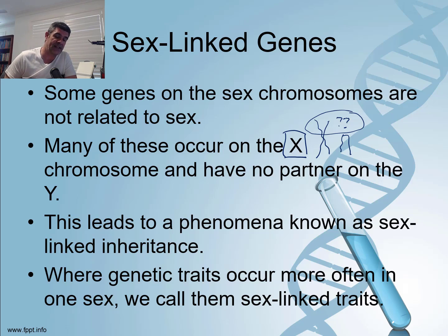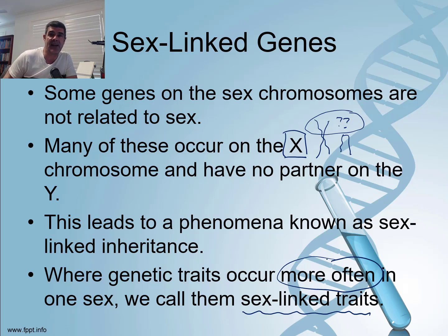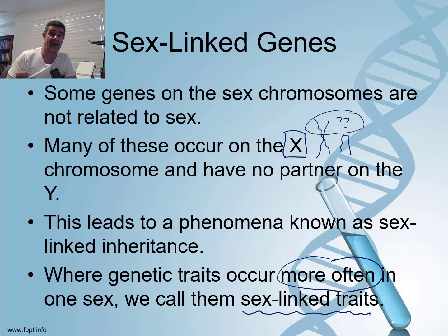Where genetic traits occur more often in one sex, we call them sex-linked traits. We're looking for traits that occur more often in women than men, or more often in men than women. Some common examples include male pattern baldness, red-green colour blindness, and haemophilia — diseases that seem more common amongst males than females. If that is the case, it is likely associated with the X and Y chromosomes.